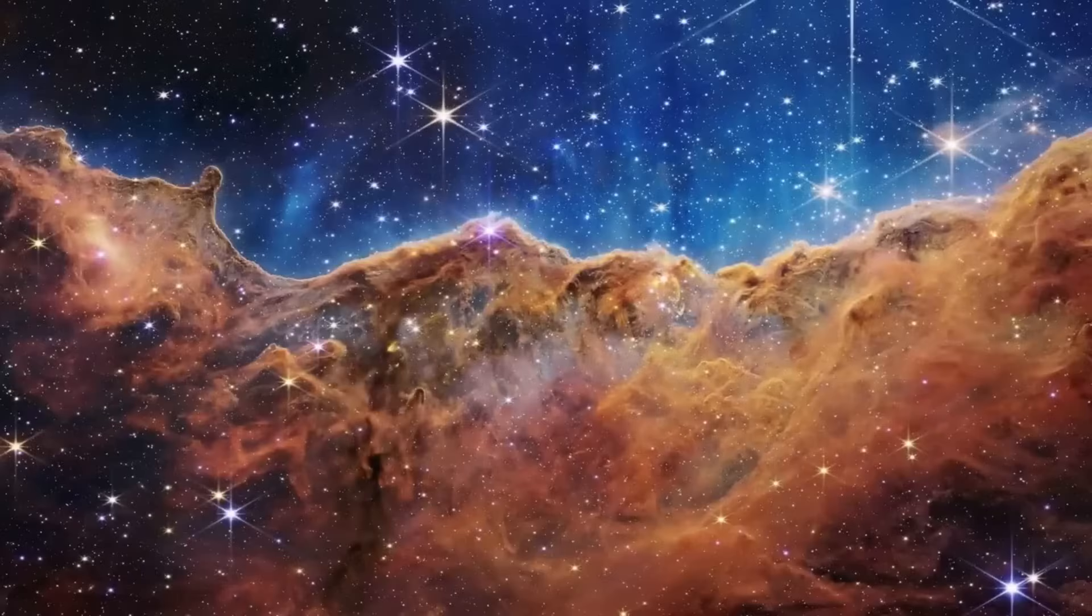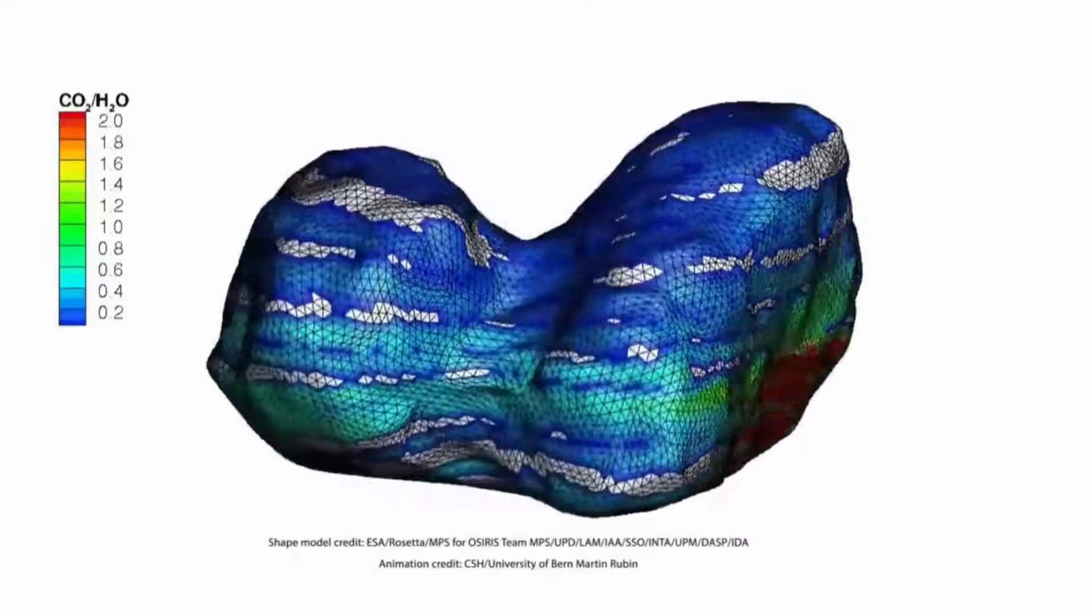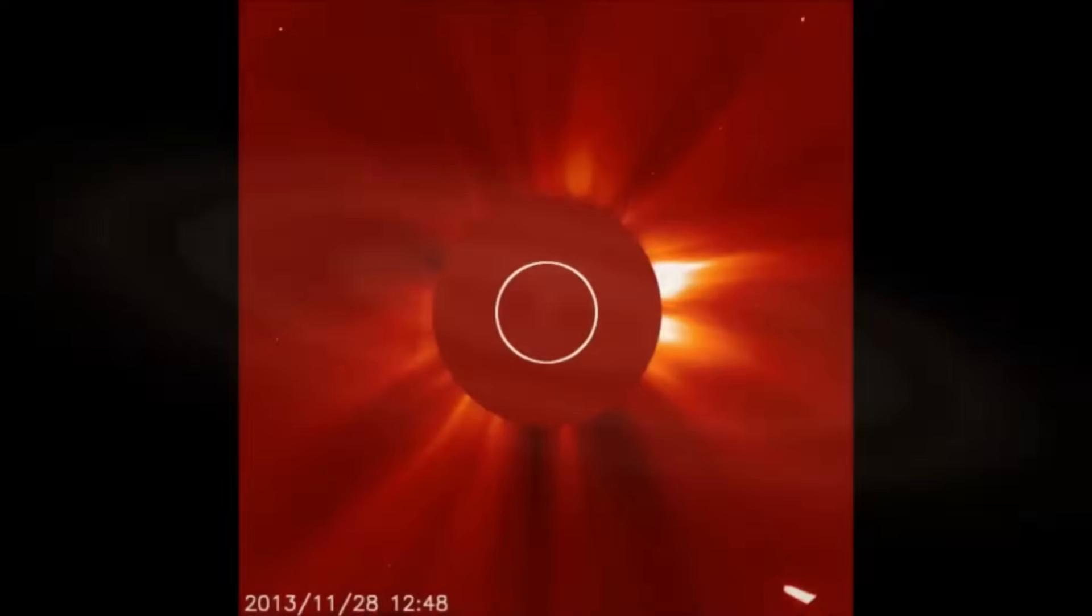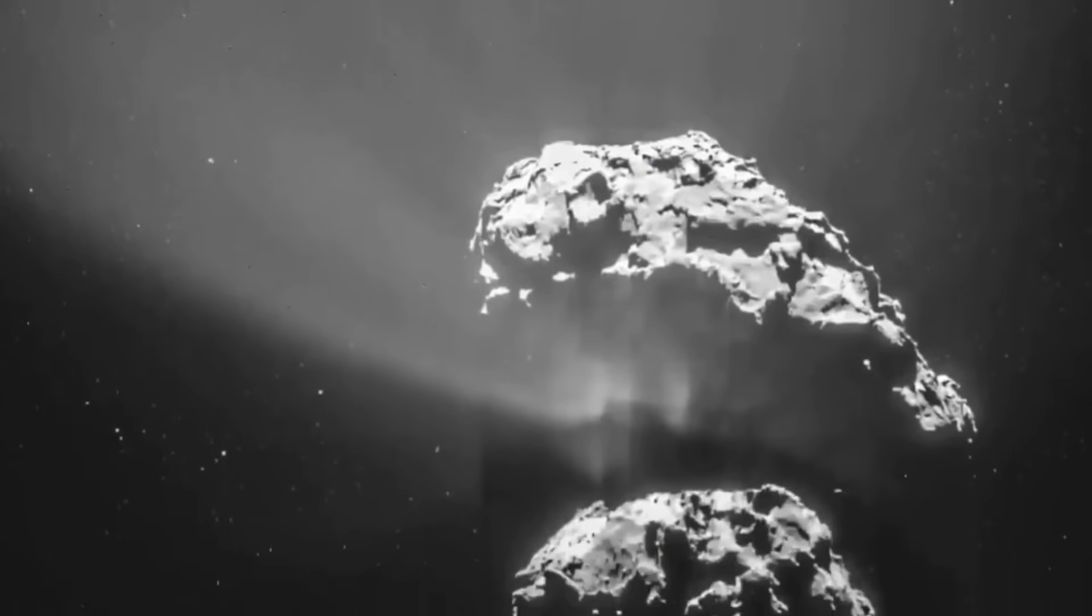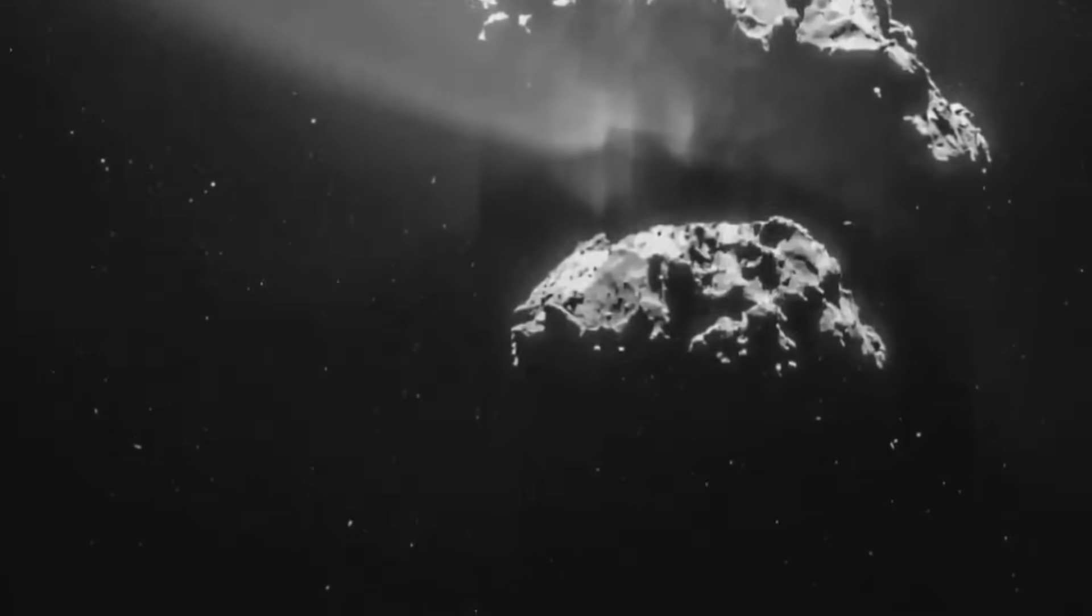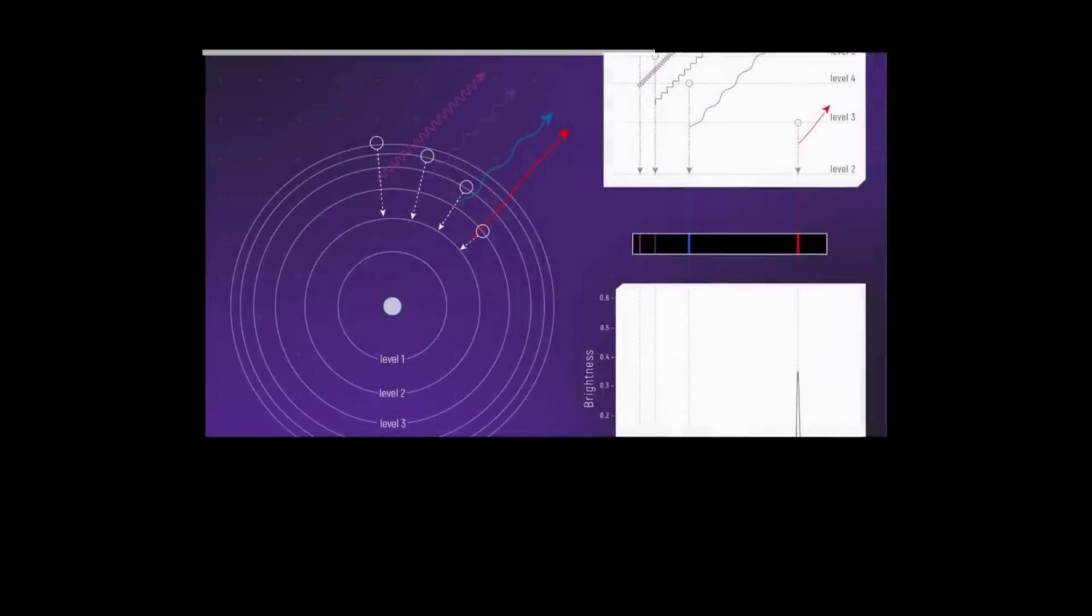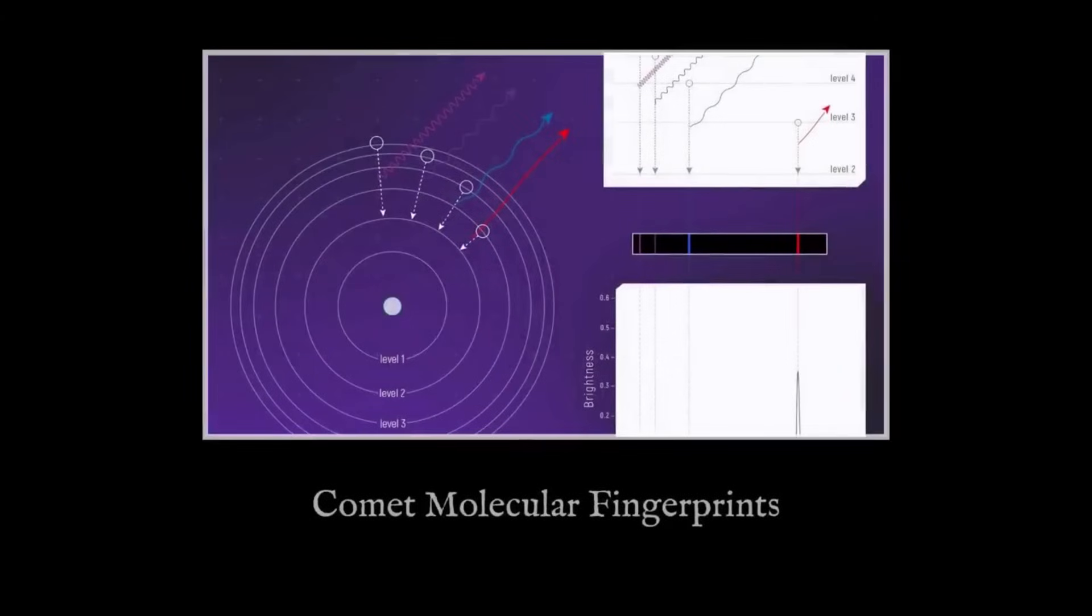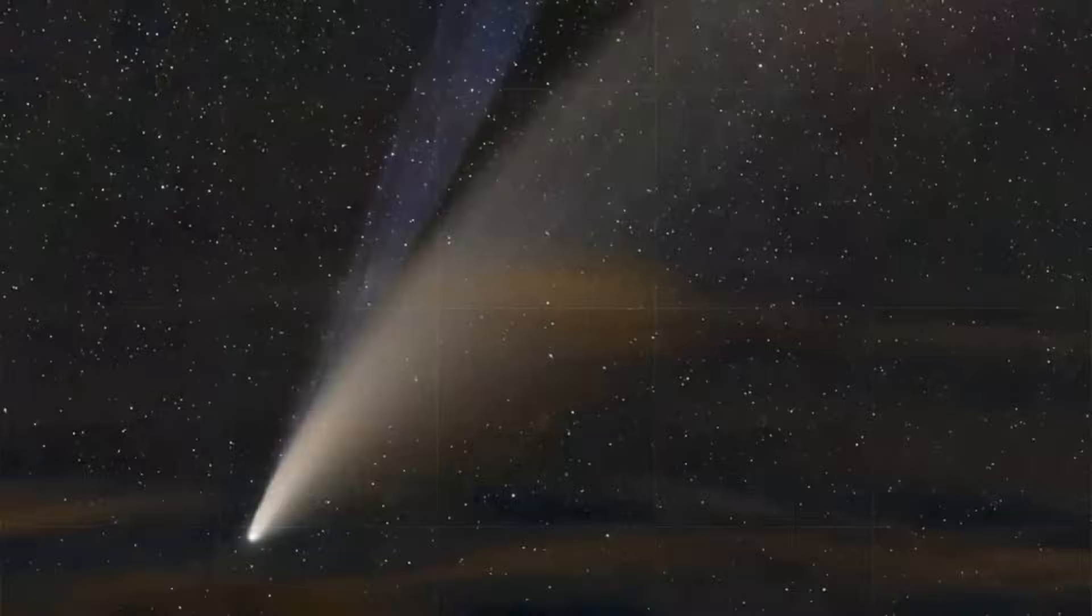Picture this: you're looking at what should be a normal comet, but instead of seeing the familiar mix of water and other gases that every comet has shown us for decades, you see something impossible. The gas coming off this mysterious visitor has 8 times more carbon dioxide than water. That's like expecting to find a snowball and instead finding a chunk of dry ice. No comet in our entire solar system has ever behaved this way, and scientists are scrambling to figure out what this means. But here's where it gets even stranger.